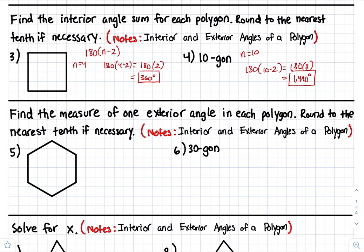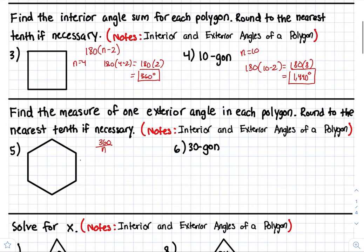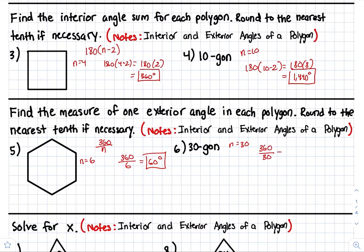Find the measure of one exterior angle on each polygon, round to the nearest tenth if necessary. To find an exterior angle of a polygon, you do 360 divided by n. This figure is a hexagon — it has six sides — so 360 divided by 6 gives you 60 degrees. For a 30-gon, 360 divided by 30 equals 12 degrees, so one exterior angle is 12 degrees.